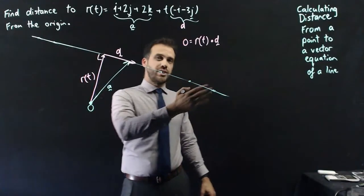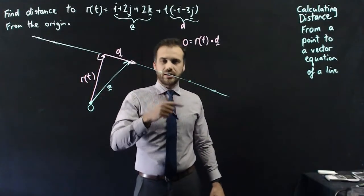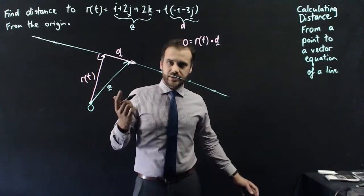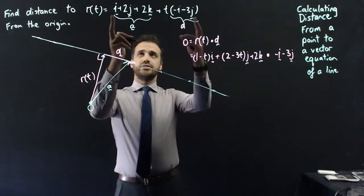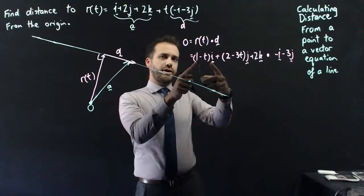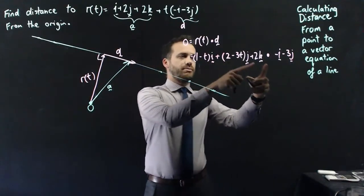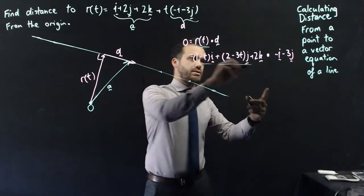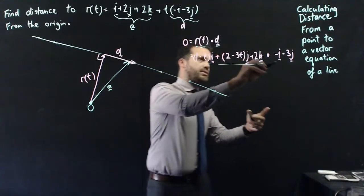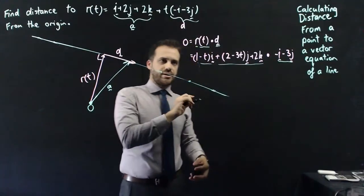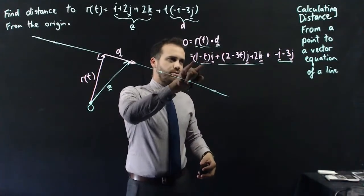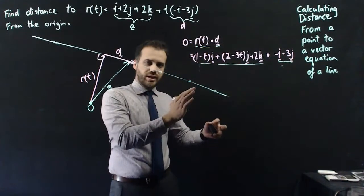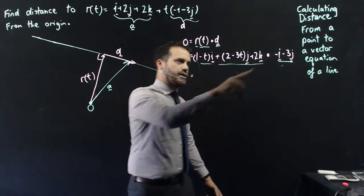To find the dot product, I need to multiply the i components together, multiply the j components together, and multiply the k components together. So I just need to rearrange this so that I have my i components together, my j components together, and my k components together. Then I multiply this by this, this by this, and this by zero, and add them together.